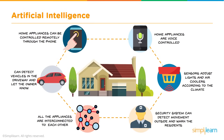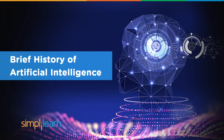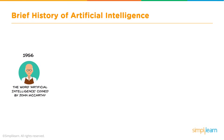Now, this is just one example in today's world. Let us start with a brief history of Artificial Intelligence. Let's start with John McCarthy. He was the first one to coin the word Artificial Intelligence, and in 1956 had the first Artificial Intelligence Conference.